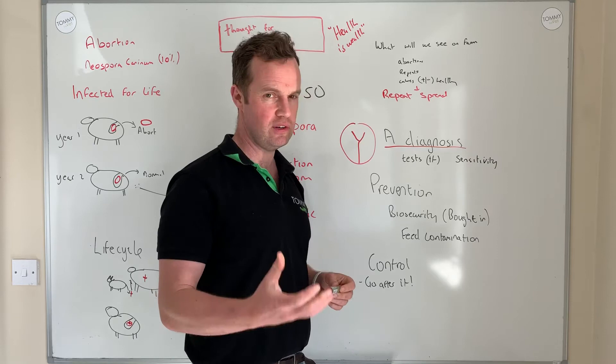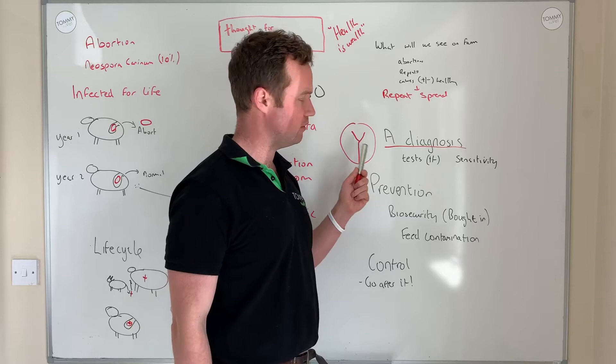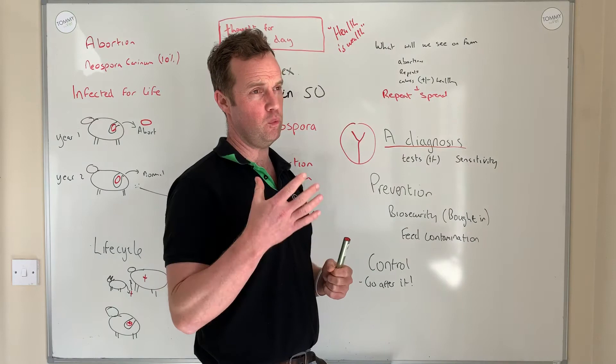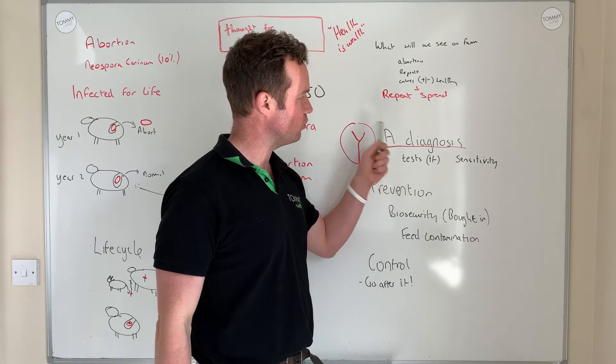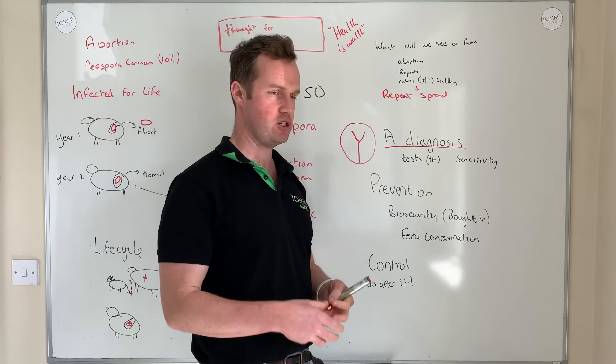No test is perfect, and with Neospora, antibody levels can be dependent on the stage of the reproductive cycle. The optimal timing for testing is in the last four to eight weeks before calving, when antibody levels are highest. Diagnosis is really important — it allows us to understand we have Neospora in the herd, confirm it has caused abortion, and then look at how we can control it.